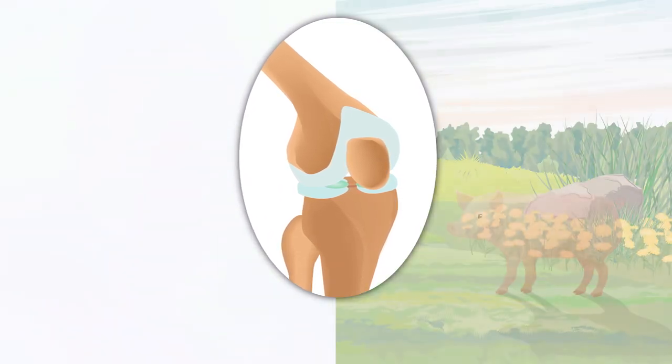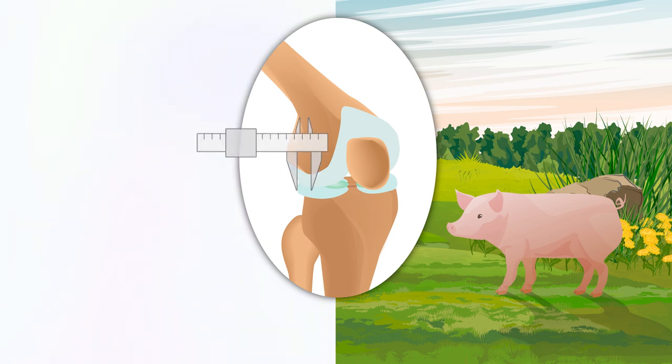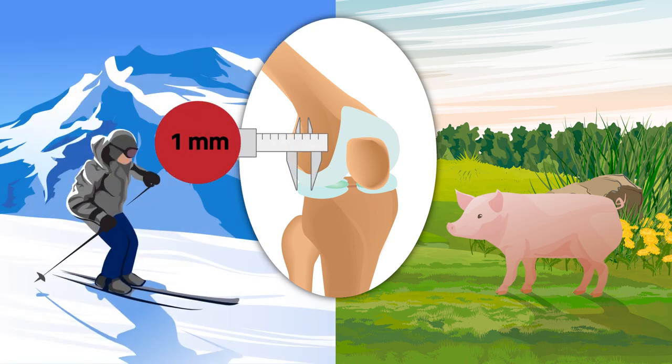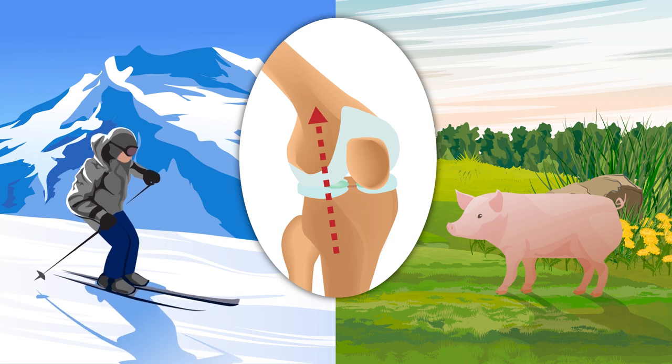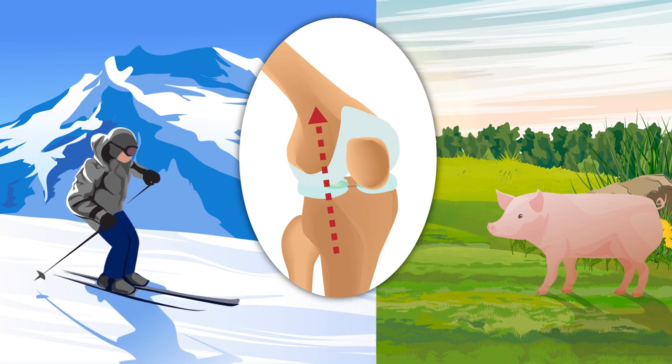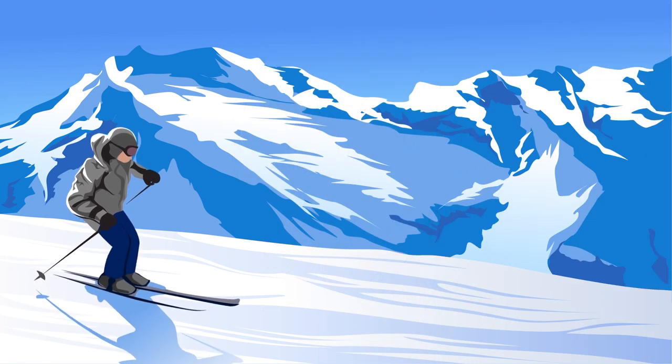Although more work is needed to translate the findings to humans, the study indicates that even 1 mm of displacement after a radial LM tear can significantly reduce load transmission, suggesting that repair surgery is worth considering for human patients with displaced, torn LMs.